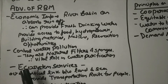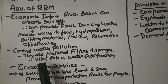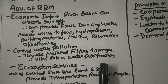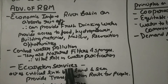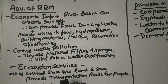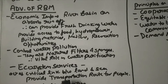The second advantage is that it controls water pollution. River basins are natural filters and sponges that play a vital role in water purification. Third is ecosystem services — they act as a critical link between land and sea, and also provide transportation routes for people.